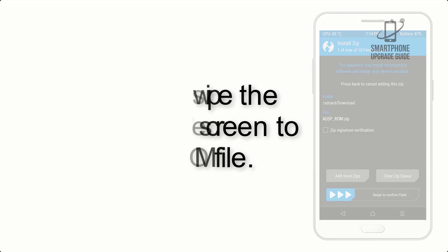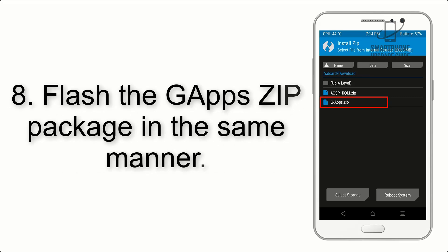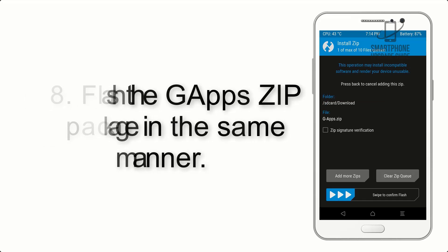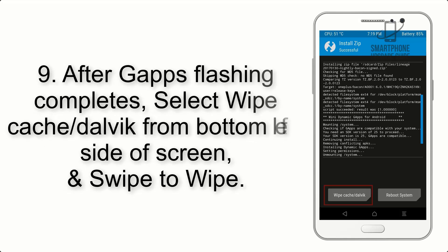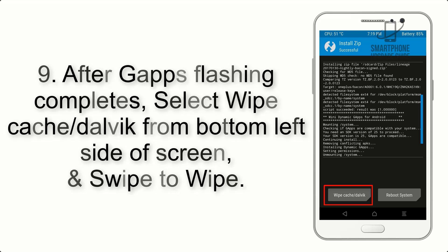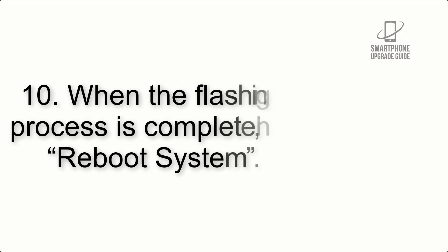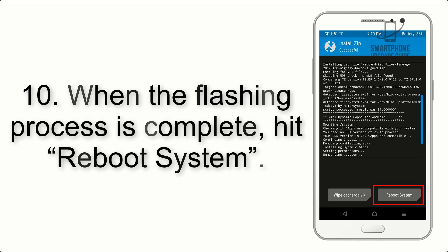Step 7: Swipe the button on the screen to install the ROM file. Step 8: Flash the gapps zip package in the same manner. Step 9: After gapps flashing completes, select Wipe Cache and Dalvik from the bottom left side of the screen and swipe to wipe.